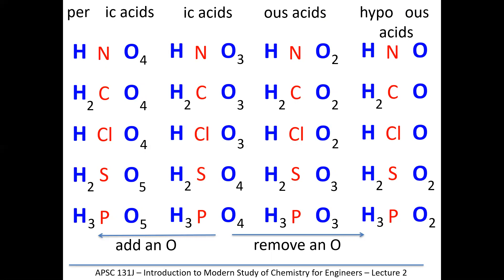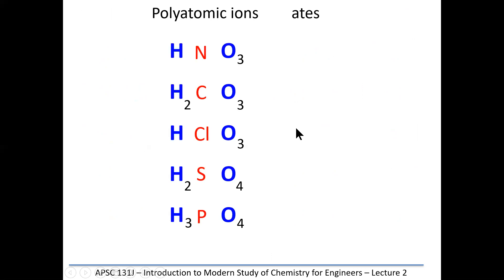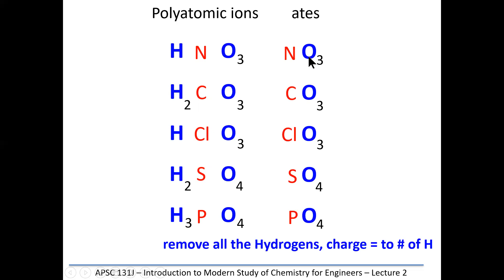The polyatomic ions all come from those acids. We can strip off all the hydrogens from the 'ic' acids, and the particles that are left are charged ions called 'ates' that combine with metals. The charge on that ion is always the same as the number of hydrogens stripped off. Nitrate is NO₃ one minus, carbonate is CO₃ two minus, chlorate is ClO₃ one minus, sulfate is SO₄ two minus, phosphate is PO₄ three minus. Those are the 'ates'.